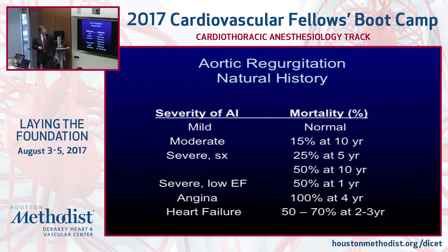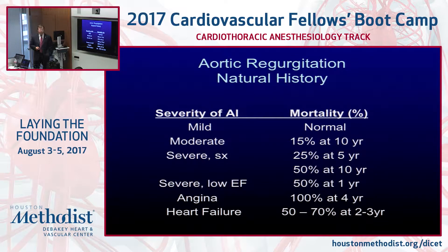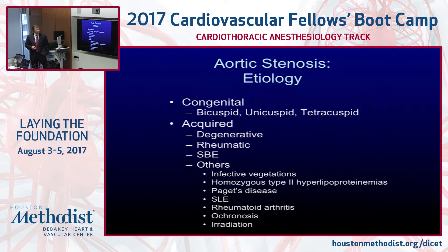The natural history: if you have mild AI you pretty much have a normal lifespan; moderate AI carries about 15% mortality at 10 years; severe AI with symptoms has 25% mortality at 5 years and 50% at 10 years. By the time your LV starts to fail with a low EF and severe symptomatic AI, there's 50% mortality at one year. So you see the difference — moderate AI is relatively slow, but once it's severe and your EF is dropping, life expectancy goes way down.